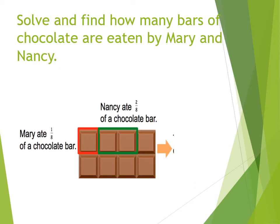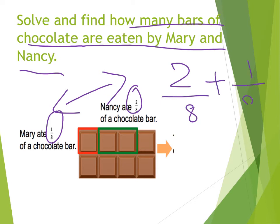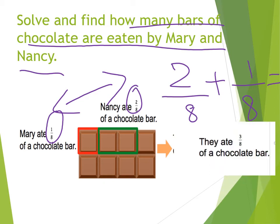Here is a question: solve and find how many bars of chocolate are eaten by Mary and Nancy. Nancy ate two out of eight of a chocolate bar, and Mary ate one out of eight of a chocolate bar. We need to find out how many bars of chocolate are eaten by both together. Two out of eight plus one out of eight gives us three out of eight. They ate three out of eight of a chocolate bar.